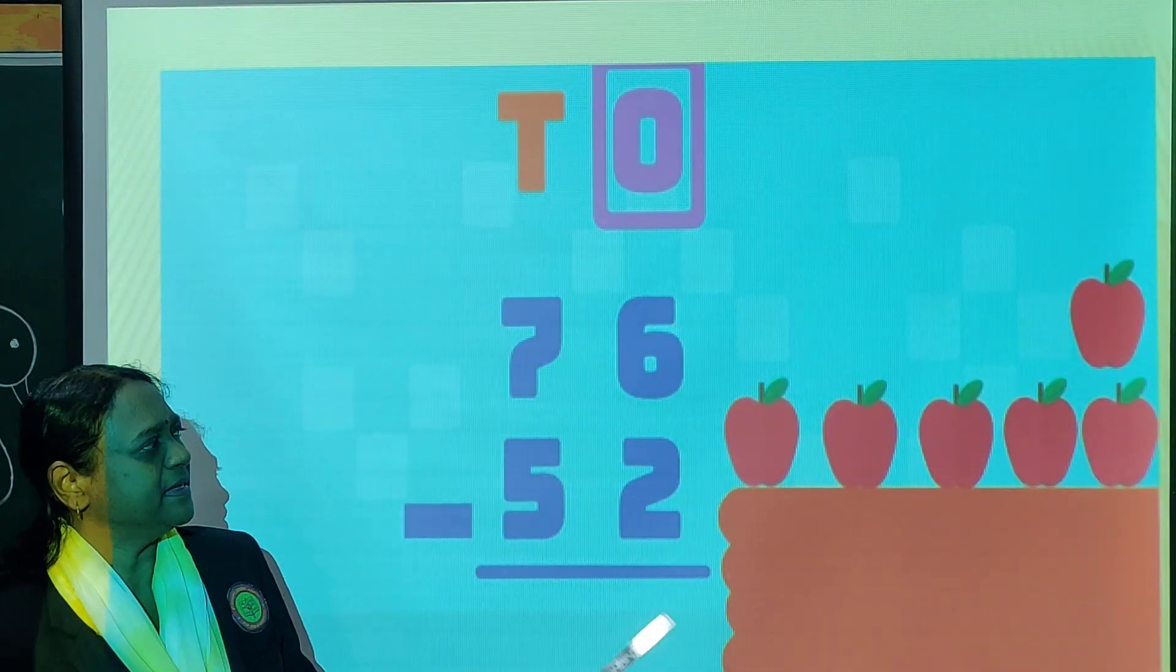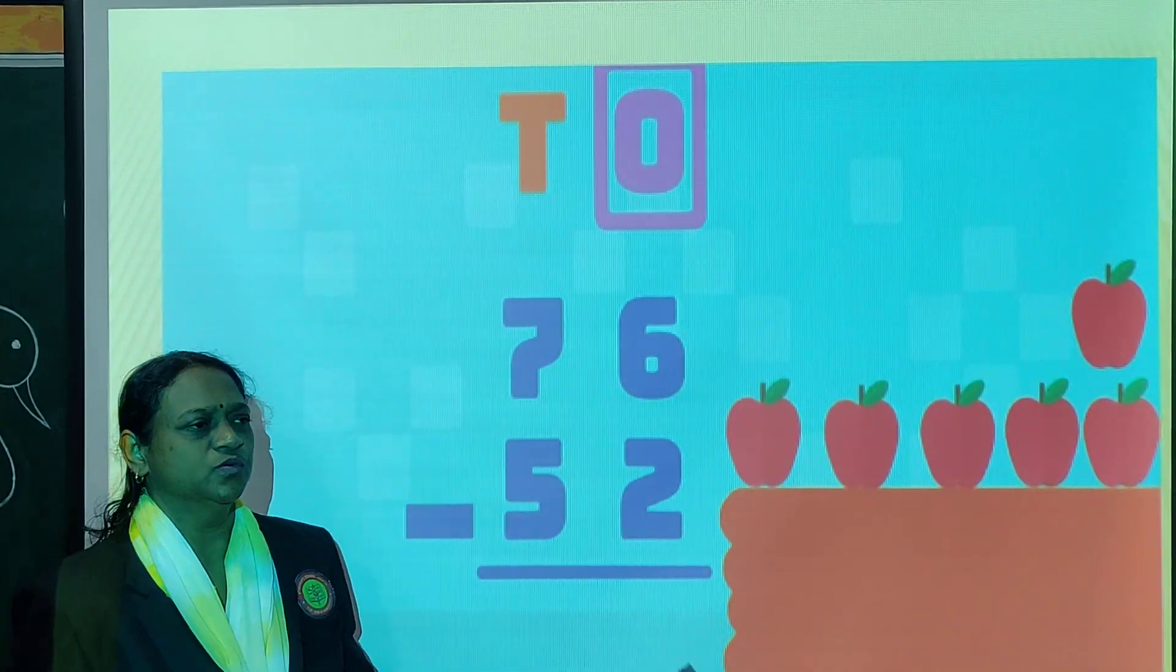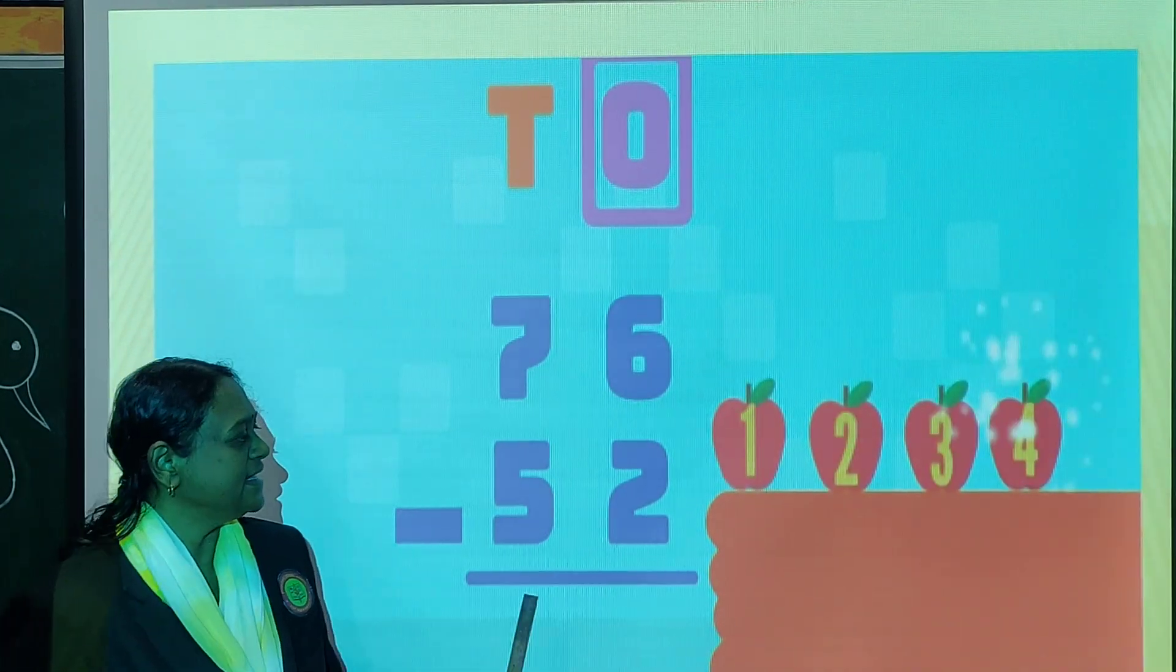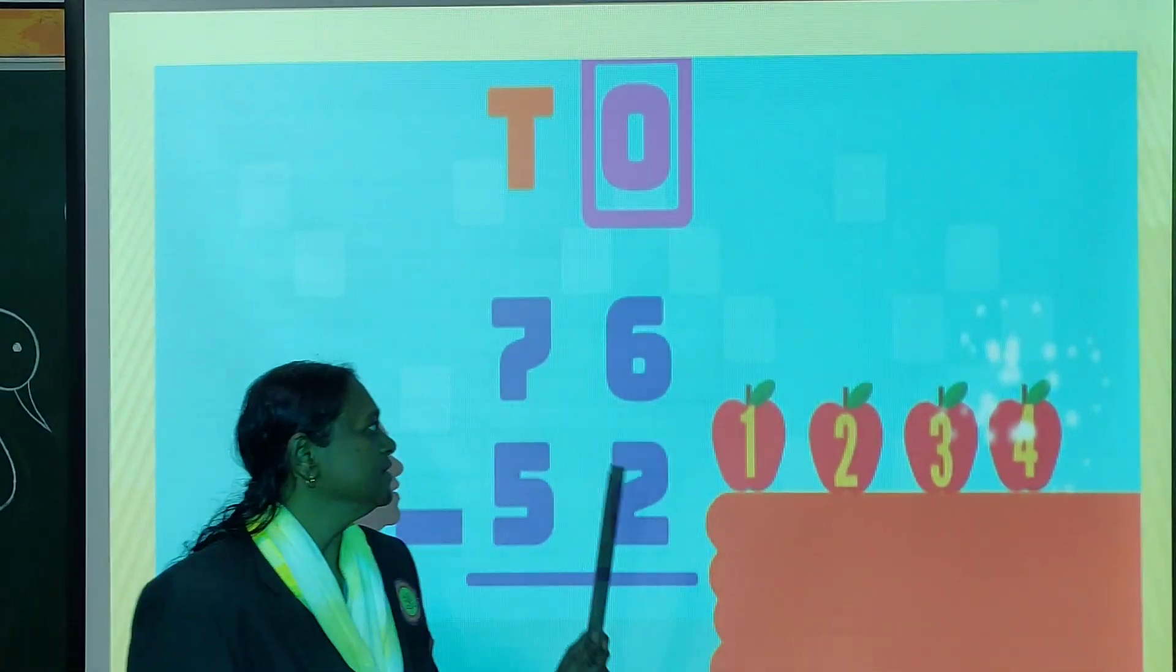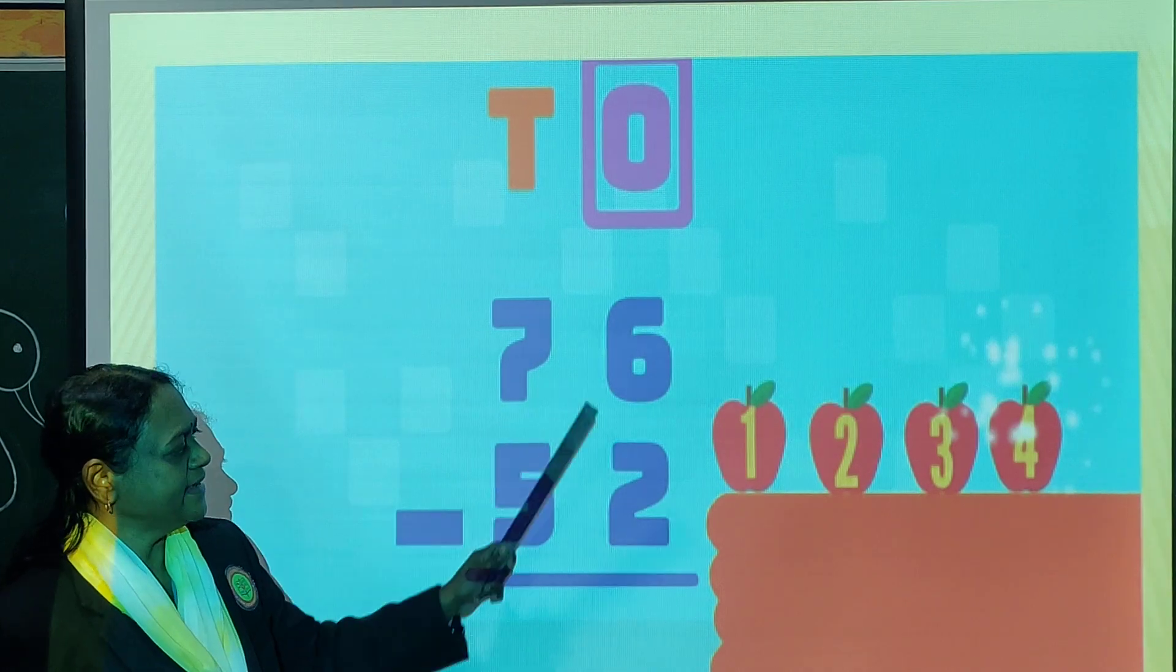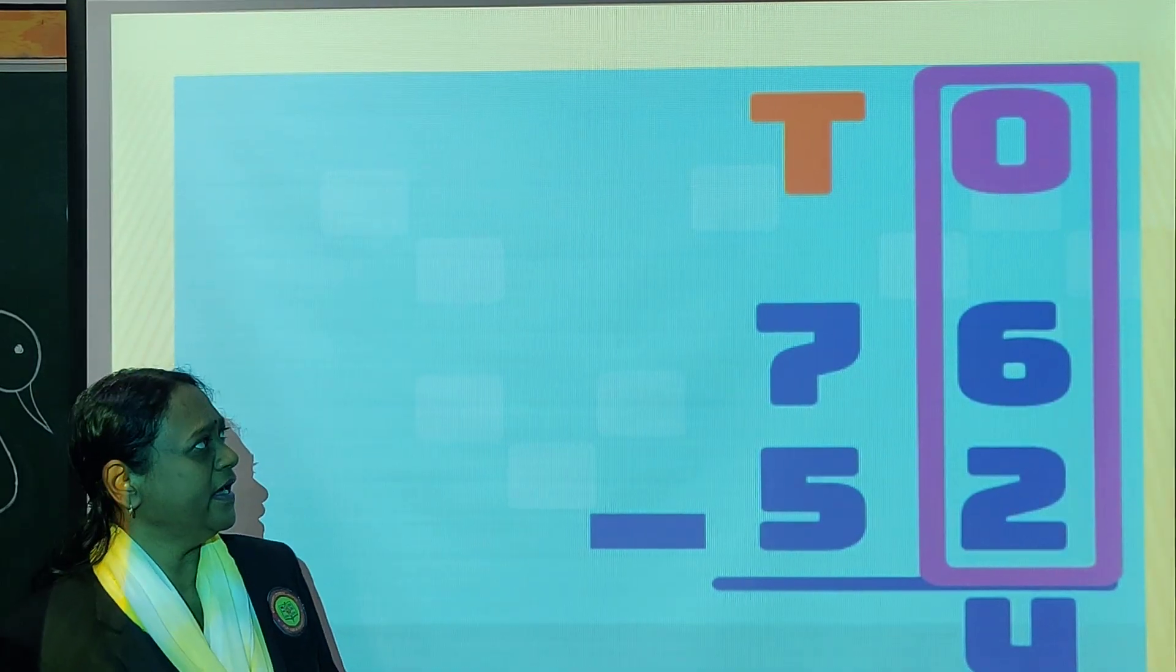How many apples? 1, 2, 3, 4, 5 and 6. From this we will minus 2. Okay, so what is left? 1, 2, 3, 4. So in ones column 6 minus 2, the answer will be 4.